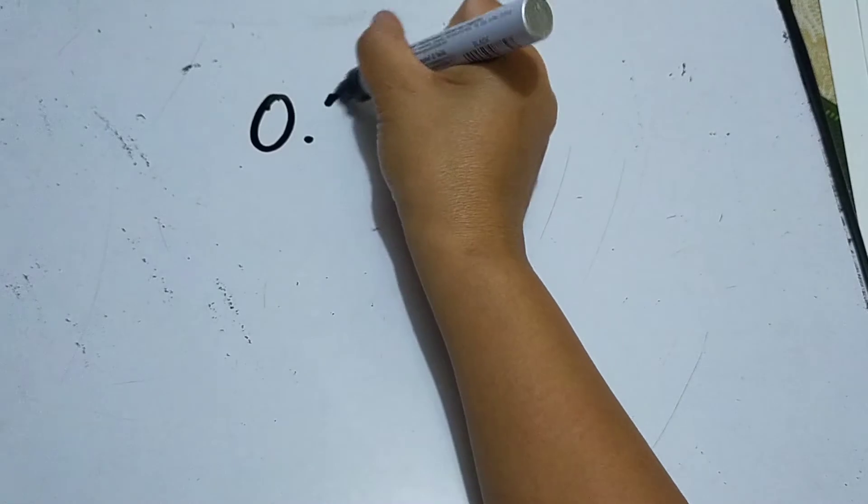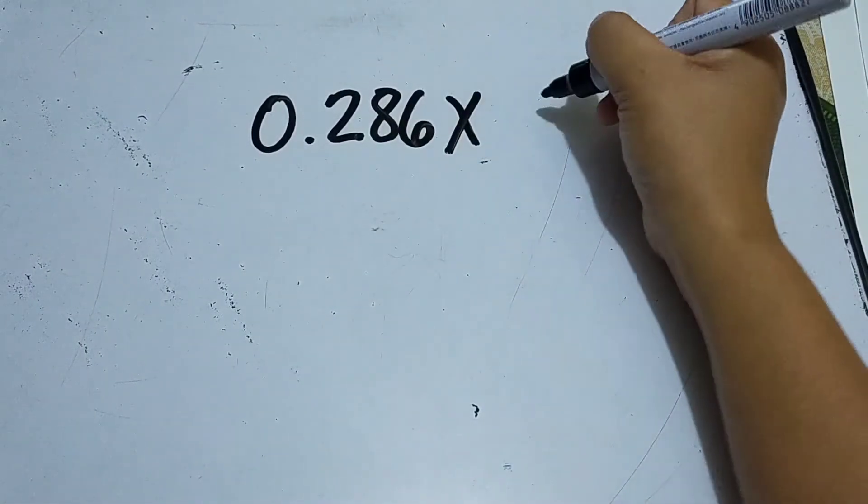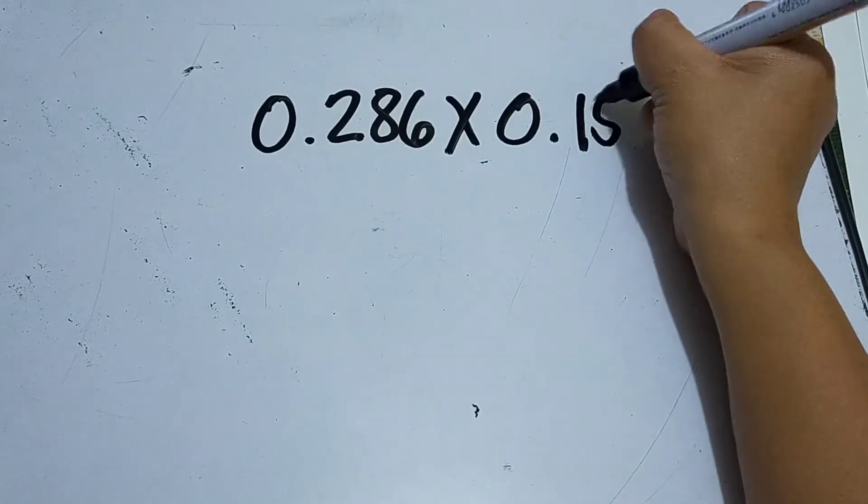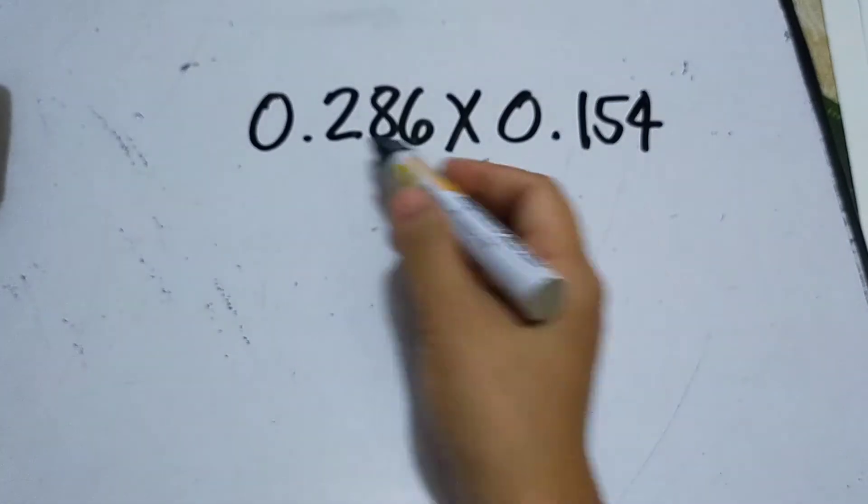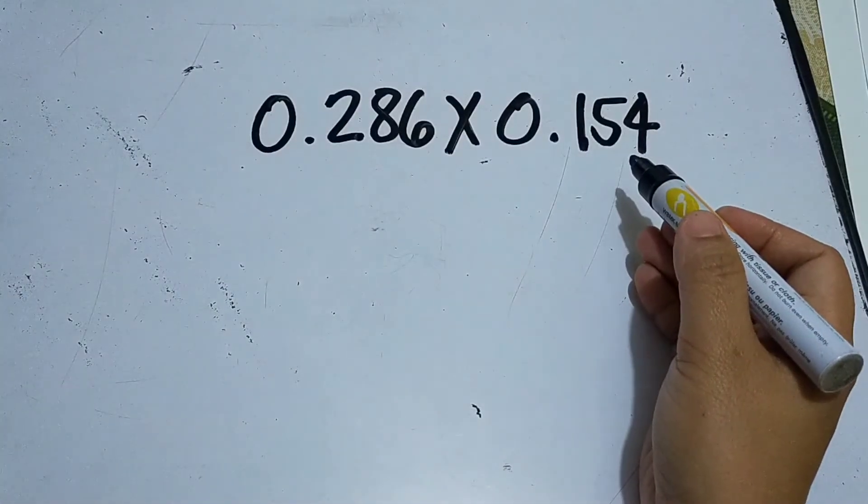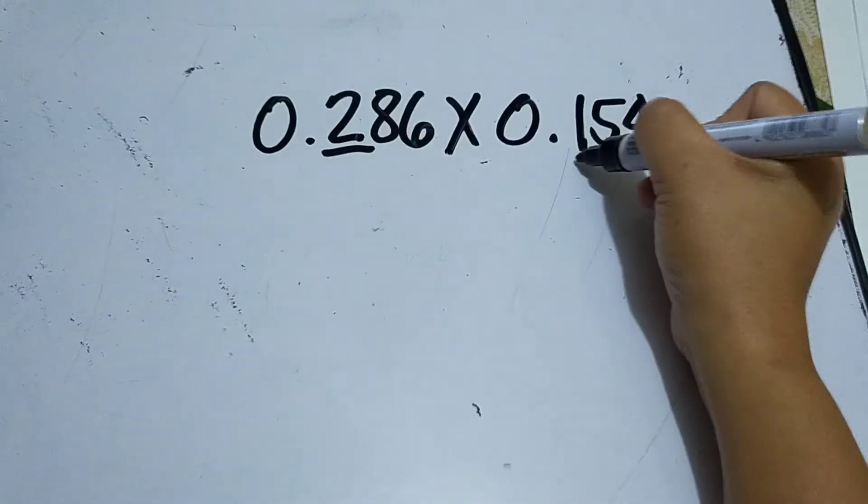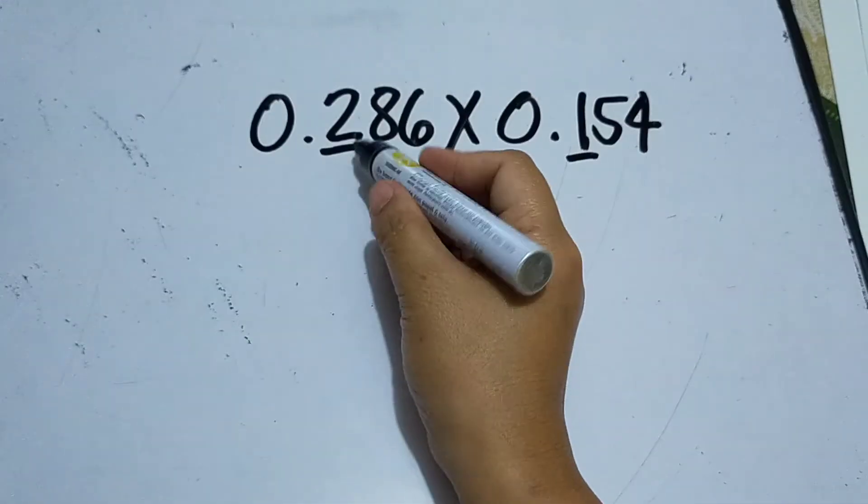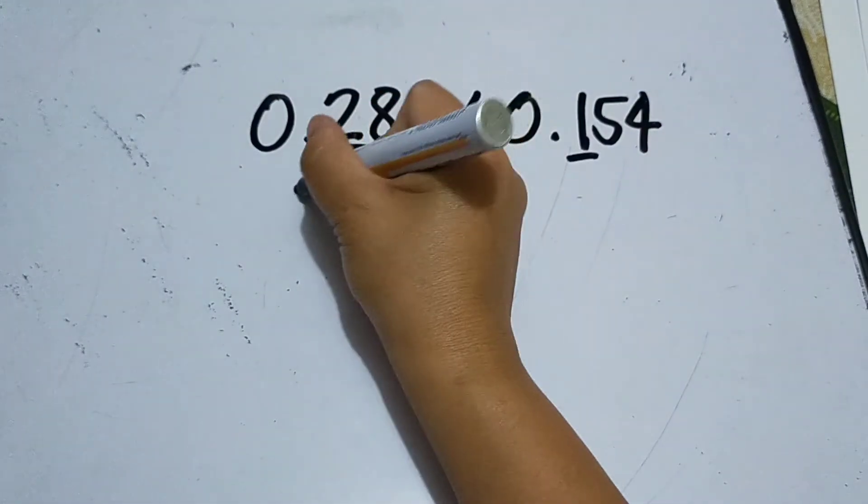0.286 thousandths times 0.154 thousandths. Same procedure - we're going to round this number to the nearest highest possible place value. The highest possible place value is tenths, so that means when we round off this, the result is three...